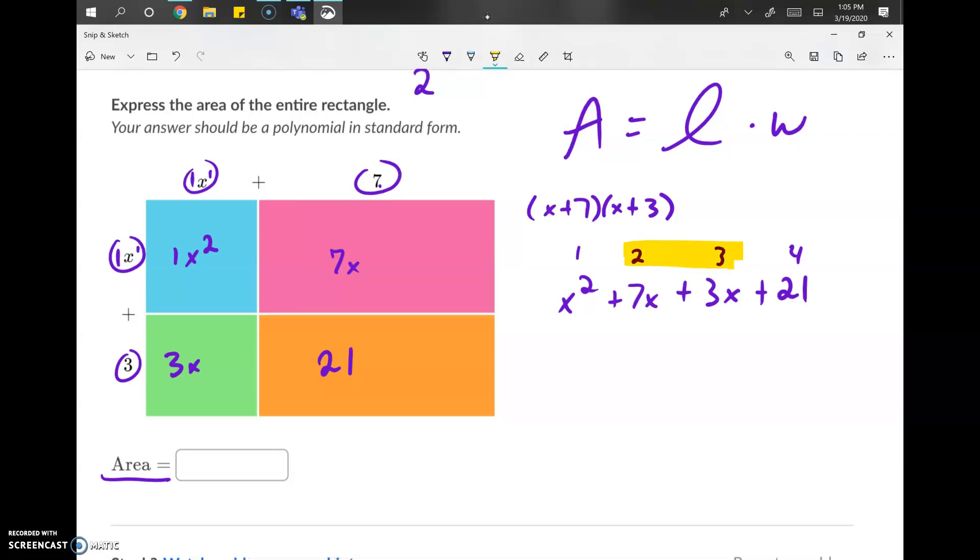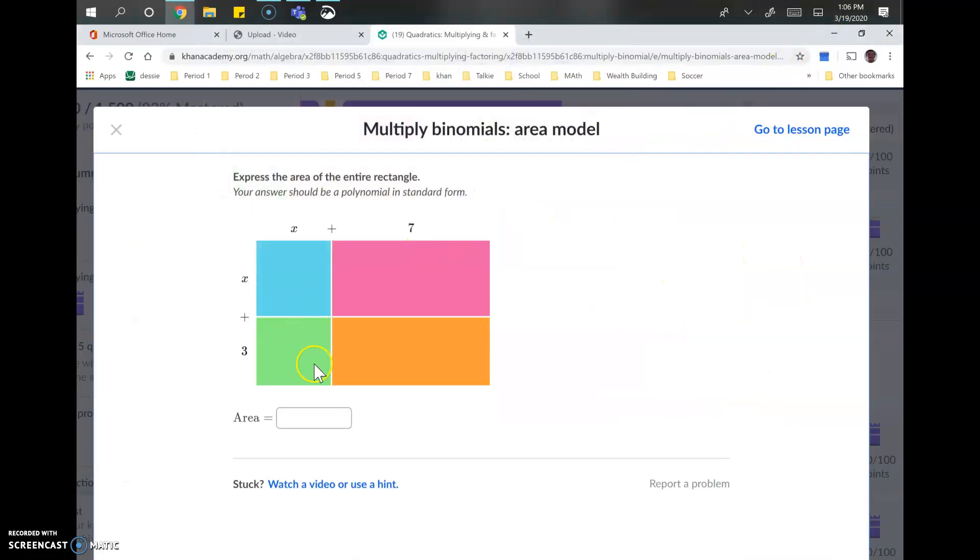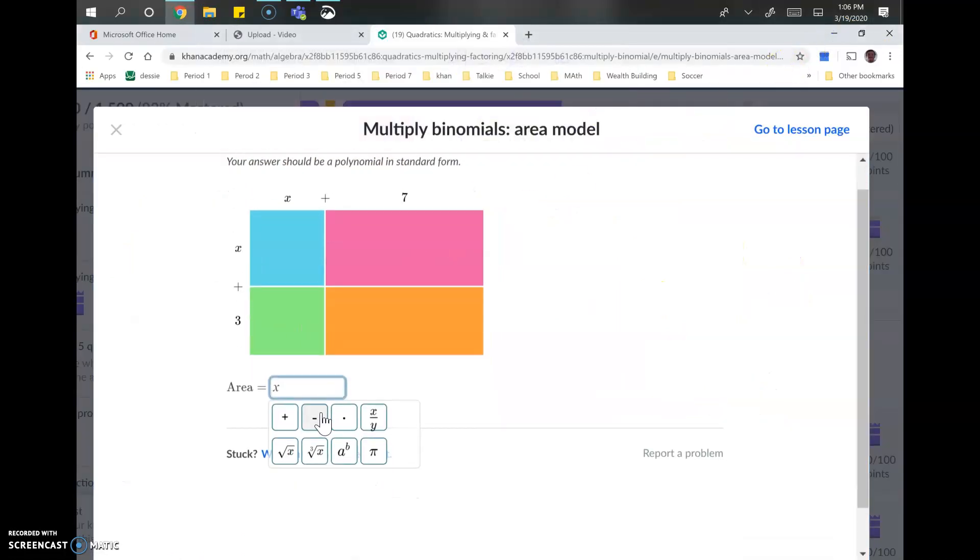So if we've got seven x's right here, and we've got three x's, rather than say we've got seven x's and three x's, we can just say we got 10 x's. We can't say that about anything else, but we can say that we've got 10 x's. And then the rest we can't combine. So x squared plus 10x plus 21. So although we had four things, two of those things we could combine. So our final answer is actually just going to be three things. x squared plus 10x plus 21.